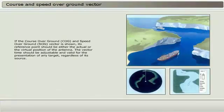If the course over ground and speed over ground vector is shown, its reference point should be either the actual or the virtual position of the antenna.